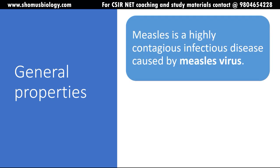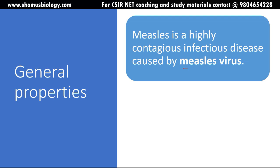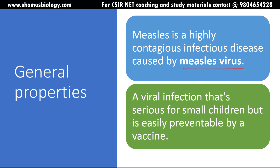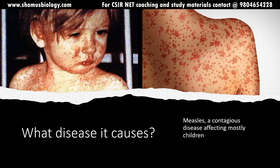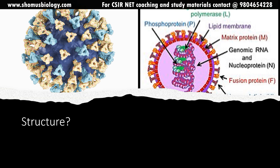The first thing is the general properties of measles. It is a highly contagious infectious disease caused by measles virus — a viral infection that is serious for small children but is easily preventable by a vaccine. If a child gets the infection it is short-lasting but highly contagious. If 10 children come in contact with an infected child, 8 to 9 out of those 10 healthy children will incur this infection — that's how contagious this infection is.